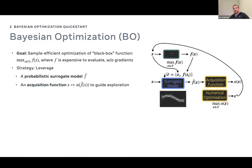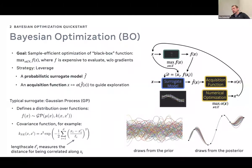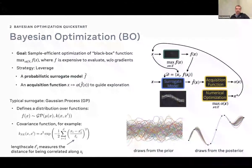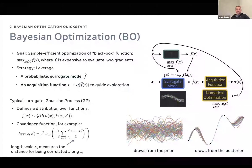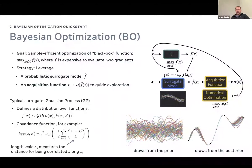Very quick start — we want to optimize a black box function F. F is expensive to evaluate and doesn't provide gradients. The strategy is we use a probabilistic surrogate model F-hat and an acquisition function operating on that to help us deal with the exploration-exploitation tradeoff. A typical model used in this space is a Gaussian process. It defines a distribution over functions, with a mean function mu and a kernel function k characterizing that GP. GPs are nonparametric regressors with well-calibrated uncertainty estimates.